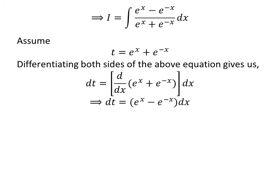The derivative of exponential of x is exponential of x, and the derivative of exponential of minus x is minus exponential of minus x by application of the chain rule. So, exponential of x minus exponential of minus x times differential of x is equal to differential of t.